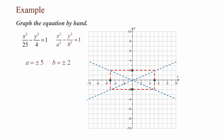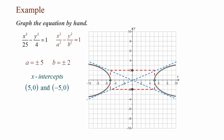Now that I have my asymptotes, I can draw my hyperbola. Since x² / 25 is to the left of the minus sign, I have x-intercepts at (5, 0) and (−5, 0). I draw a parabola on the left with a vertex of (−5, 0) and a parabola on the right with a vertex of (5, 0). Now I have the graph of x² / 25 − y² / 4 = 1.